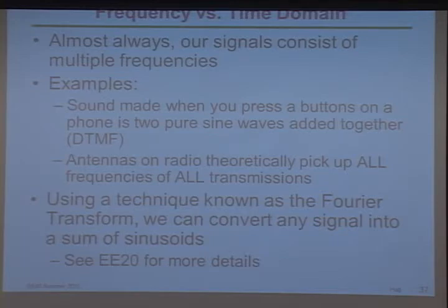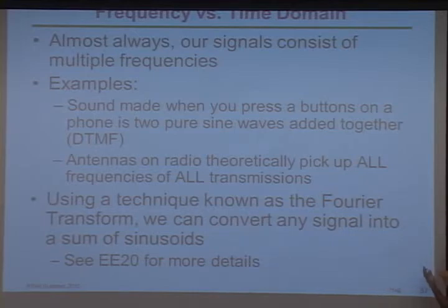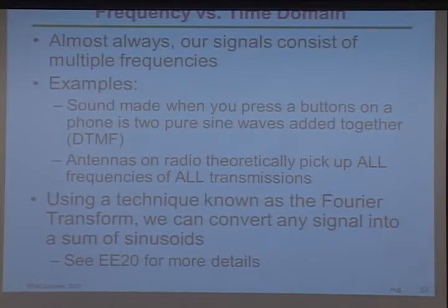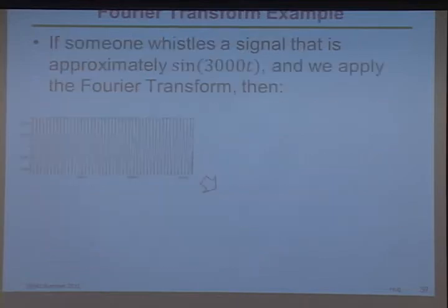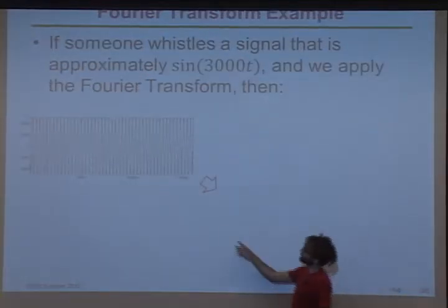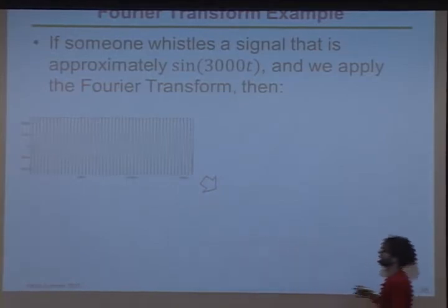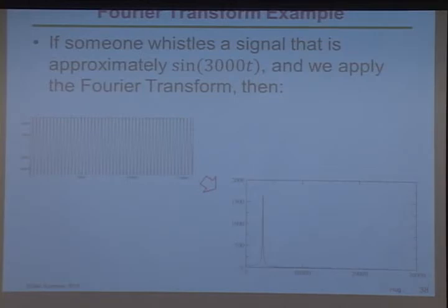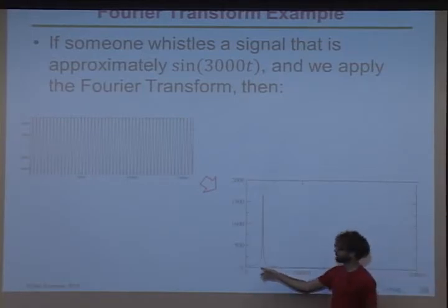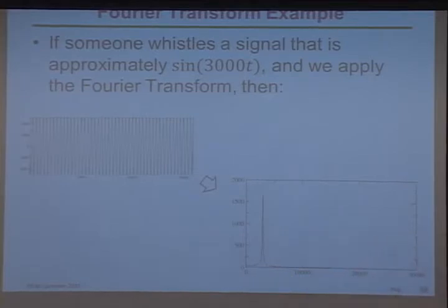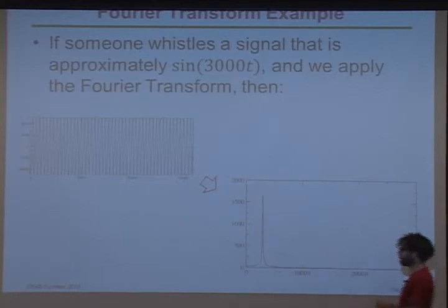For example, if you push a 1 on a phone, you get a sound which is really just two sines added together. Antennas, as I mentioned, should theoretically pick up all frequencies of all transmissions in the universe. And what's neat — this is really EE20 stuff — if you're given a signal in time, you can convert it into a frequency domain representation. There's a math technique where you can take something like sine(3000t) and end up with a plot showing a frequency of 3000 and very little of anything else. If it's a perfect sine wave, there should be an impulse function at that.